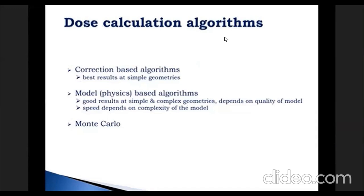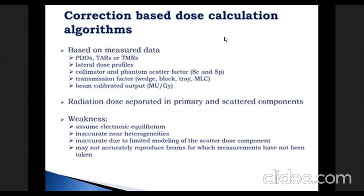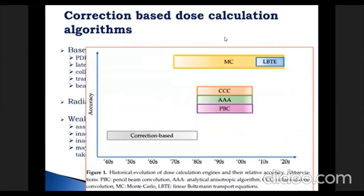An important component of any treatment planning system is the dose calculation algorithm. These can be correction-based, model-based, or Monte Carlo. Correction-based algorithms use directly measured beam data and separate radiation dose into primary and scatter components. Their main weakness is accuracy, as they assume electronic equilibrium, are inaccurate near heterogeneities, poorly model scatter dose, and may not accurately reproduce beams for which measurements haven't been acquired.